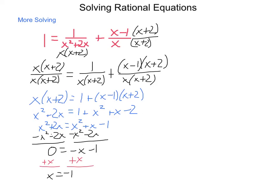So, wanting to make sure that this answer is correct, I'm going to go through and check it. Do I get 1 = 1/((-1)²+2(-1)) + ((-1)-1)/(-1)?